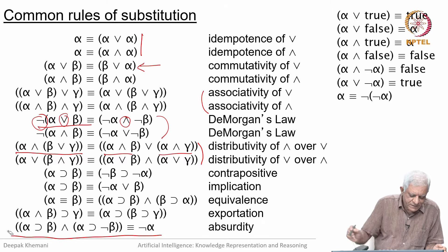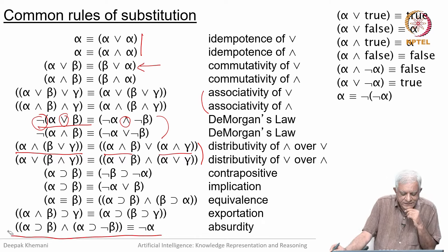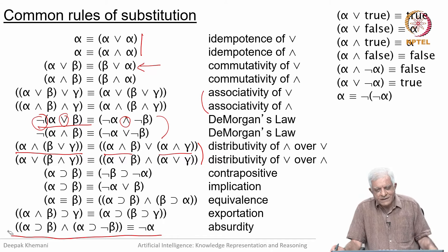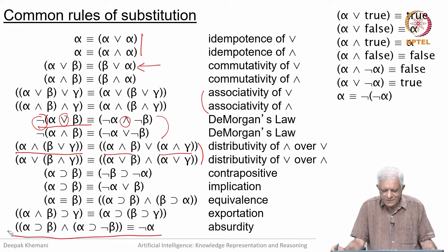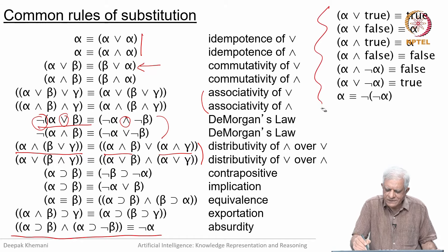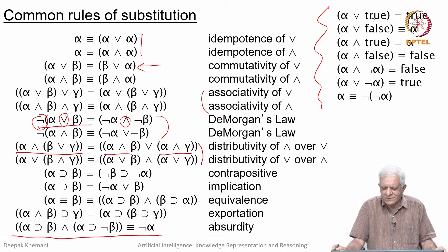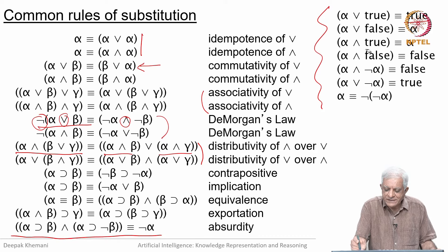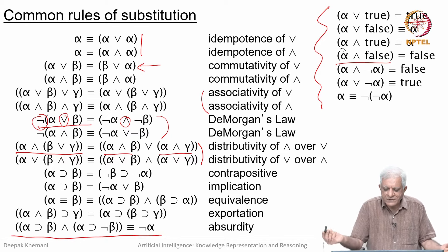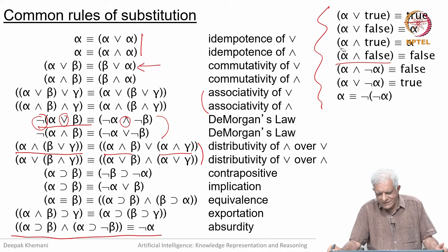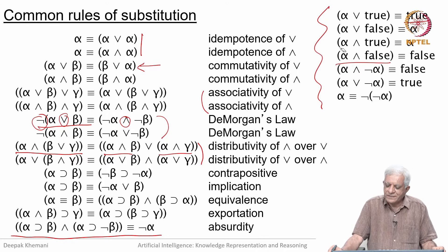Here is an interesting rule: if alpha-implies-beta is true and alpha-implies-not-beta is also true, then alpha can never be true, which means alpha is false. There are also some other simple rules: if alpha is true and the constant 'true' is there, then you might as well simply write 'true'. But if alpha and 'false' are there in a conjunction, then this formula can never be true — since false is anyway false, the formula is equivalent to writing 'false'.